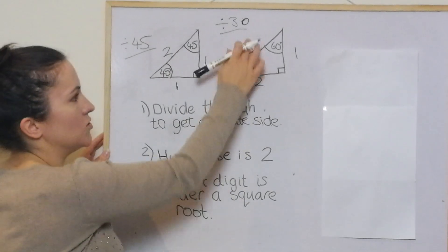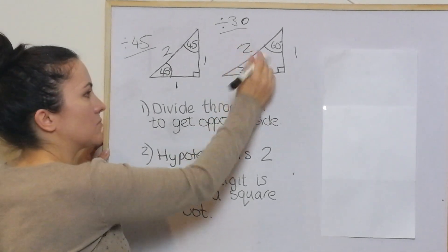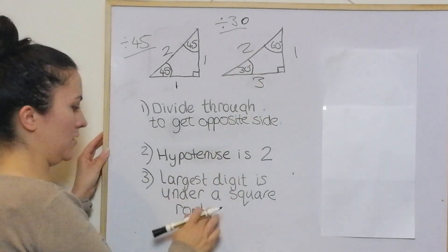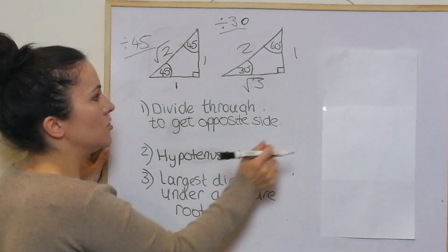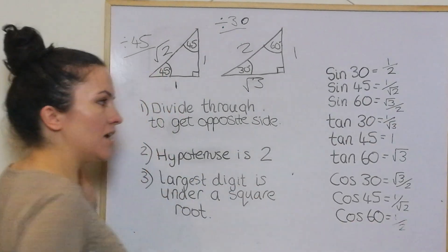So that's fine there, but we need to swap these. And then the largest digits under a square root. So that's a square root, and that's a square root. And then that allows us to get all of these.